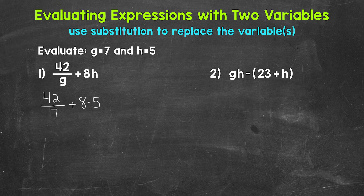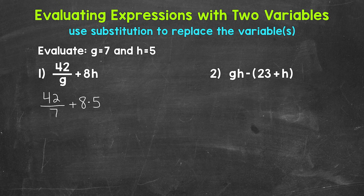Since we have more than one operation, we need to use the order of operations: parentheses, exponents, multiplication and division, then addition and subtraction. We don't have any parentheses or exponents, so the next priority is multiplication and division. We have both, so we work from left to right — division comes first. So let's do 42 divided by 7, which equals 6.